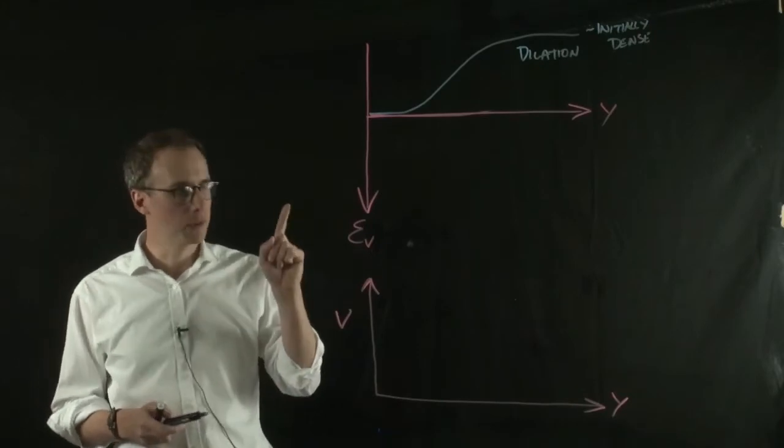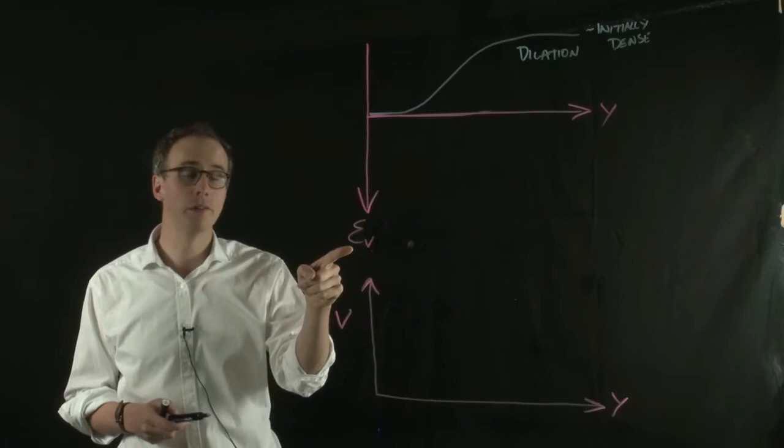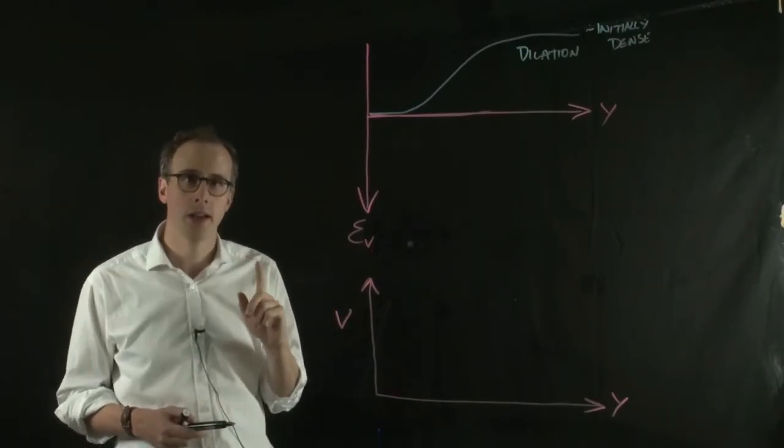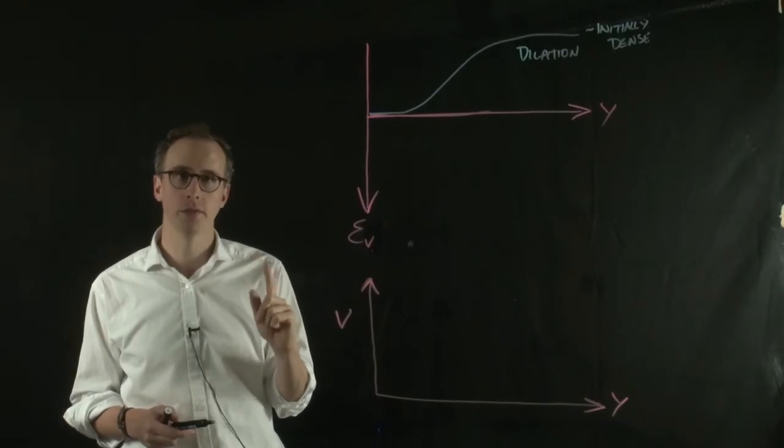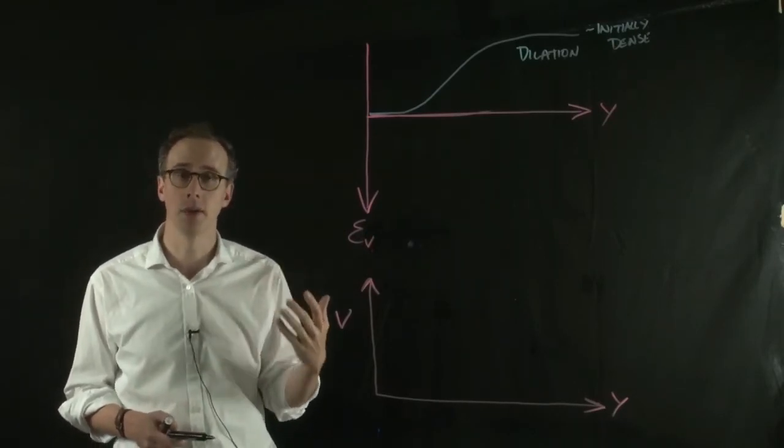So it's important to point out now why we put volumetric strain on an inverted y-axis. Well, the reason for doing that is like compressive stresses within soils taken to be positive,